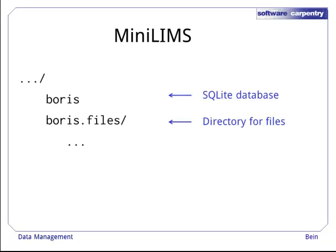A mini limbs repository consists of an SQLite database where logs are written, and a directory to store all the files it tracks. The directory has the same name as the database but with .files appended. For example, if the SQLite database is named Boris, then the directory is named Boris.files. As long as the database and the directory are named consistently, they can be moved anywhere, copied anywhere, and treated as a black box.